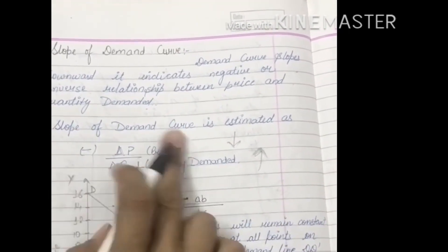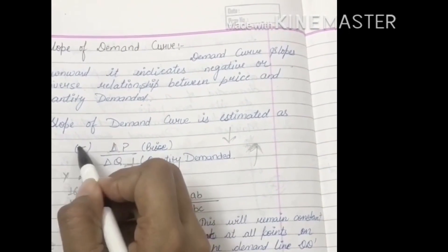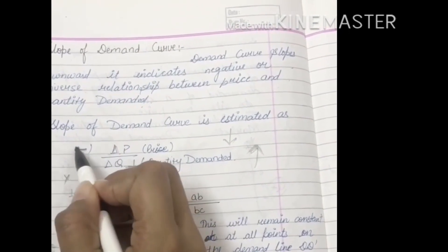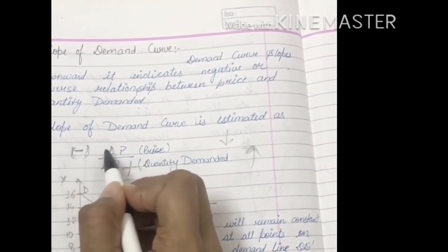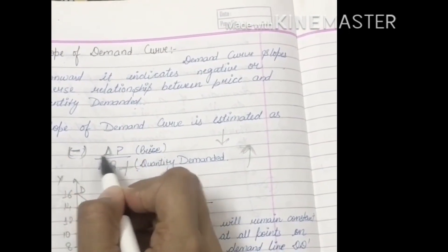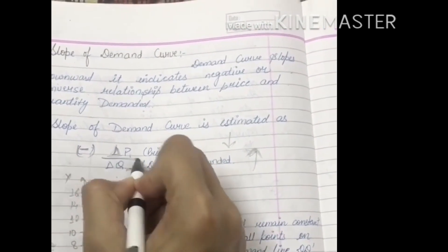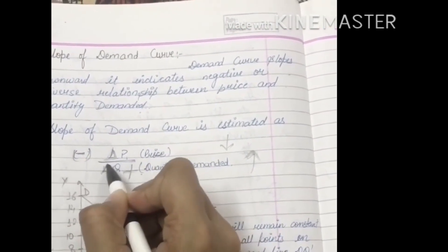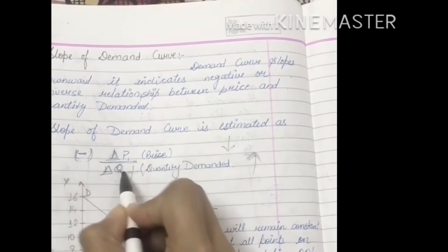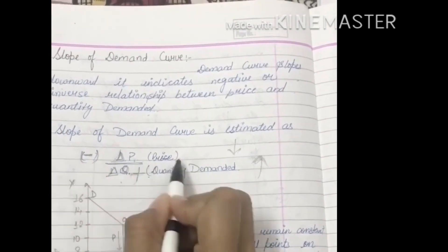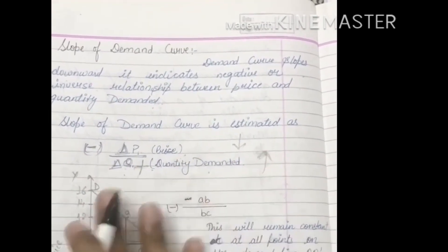We represent this relationship as a formula with a negative sign: slope equals negative (change in P divided by change in Q), where P stands for price and Q stands for quantity demanded.